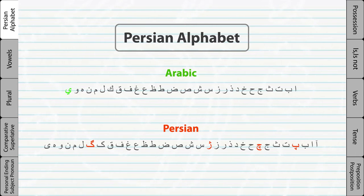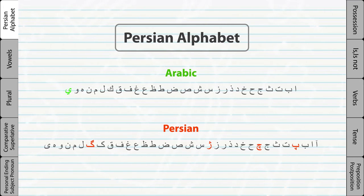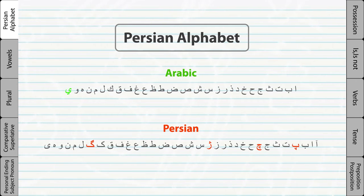Literary and colloquial Persian. Literary Persian is slightly different from the colloquial or spoken Persian, but the differences are not significant and can be learned very quickly. Since this is an intro video, we will only talk about the colloquial or spoken Persian.